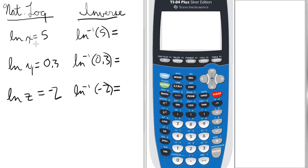If we have the ln of x equals 5, in the inverse natural log form, it'll be ln to the negative 1 of 5 equals our x value.